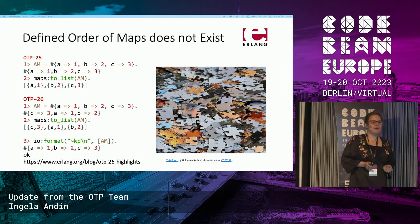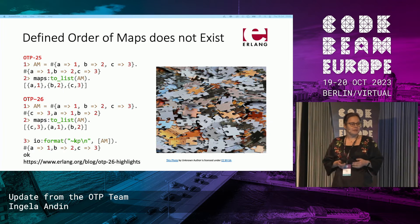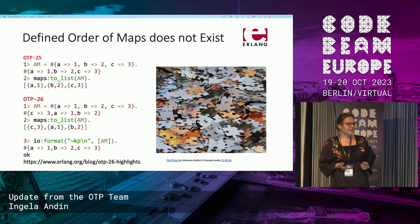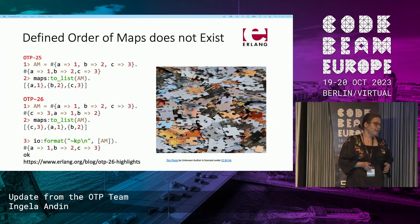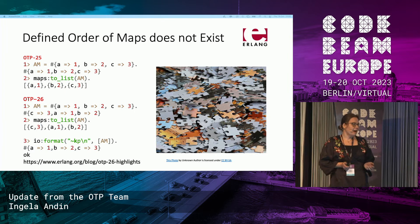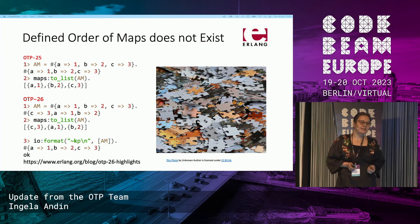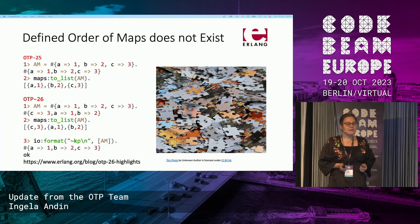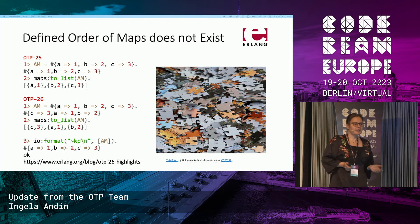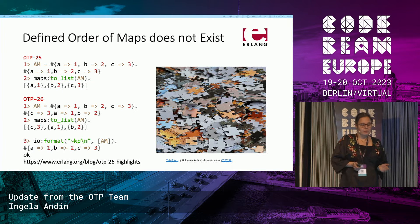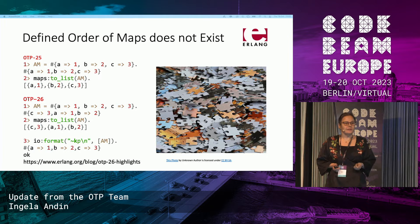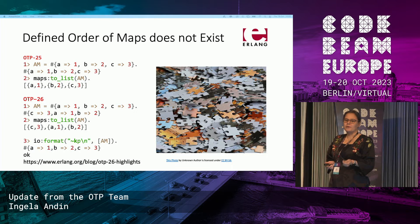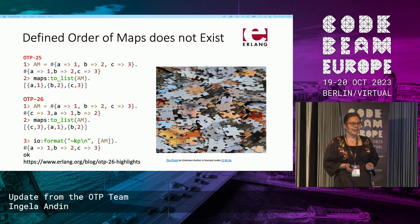That's why we have an IO format modifier, so that you can now print your maps in key order. And we also have an iterator function so that you can iterate over your maps in a defined order. If you want to see more examples, please take a look at our blog post for the OTP 26 highlights.